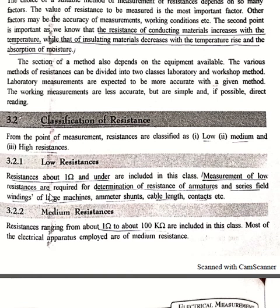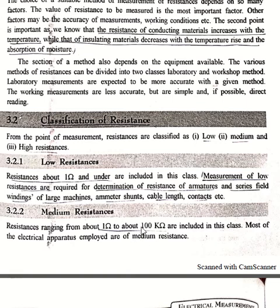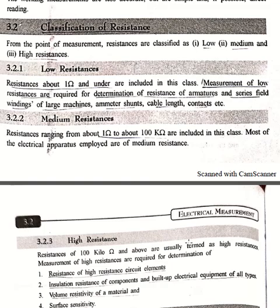Low resistance includes all resistances ranging from 1 ohm and less than that. Low resistance includes resistance of armatures and series field windings of large machines, ammeter shunts, cable lengths and contact leads, etc. Medium resistance includes the range of 1 ohm to about 100 kilo-ohms. Basically, all electrical apparatus resistances fall in this range and are medium resistance.